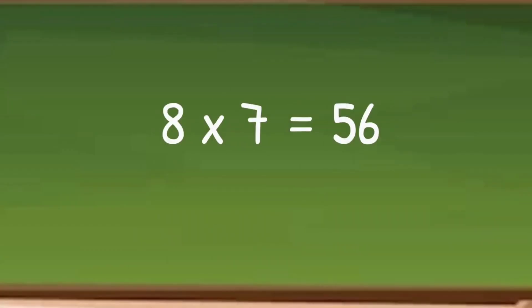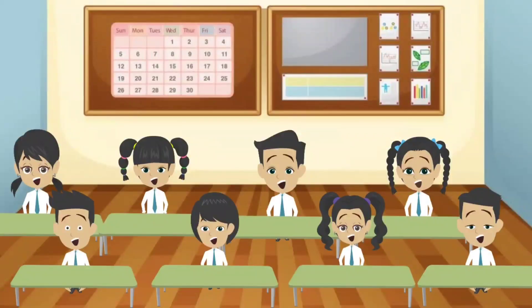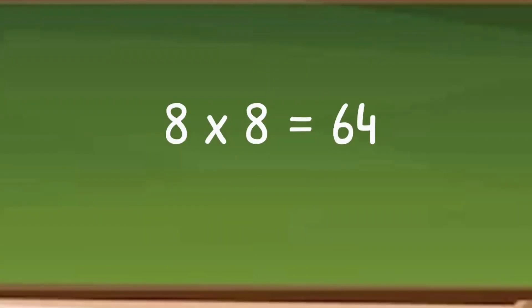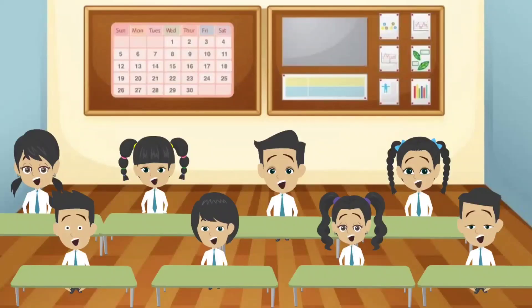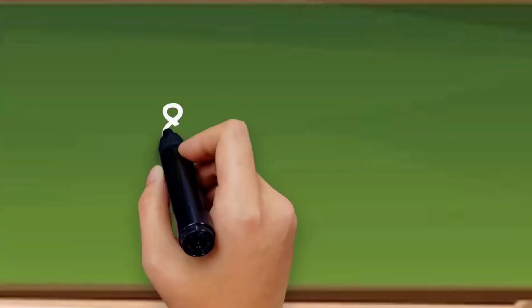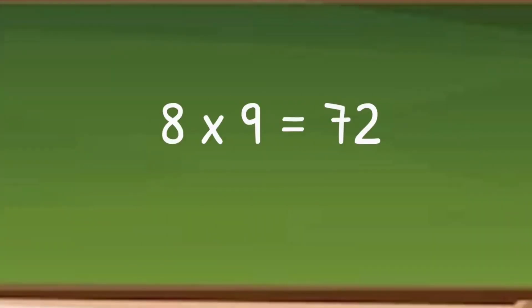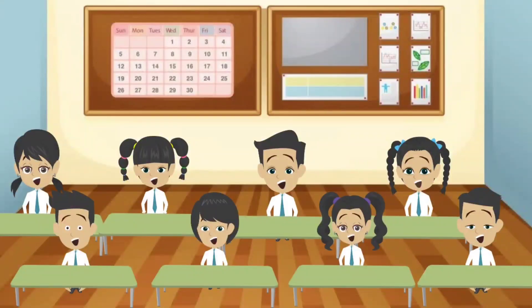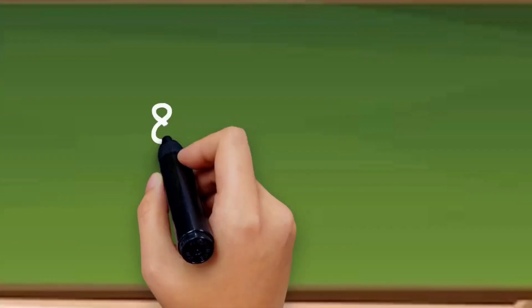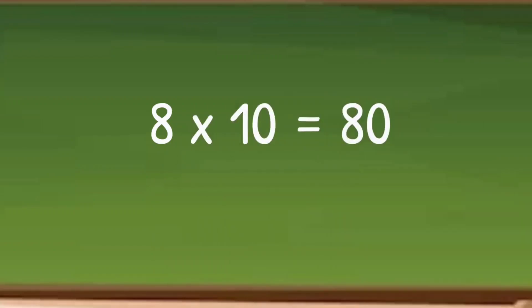8 7s are 56. 8 8s are 64. 8 9s are 72. 8 10s are 80.